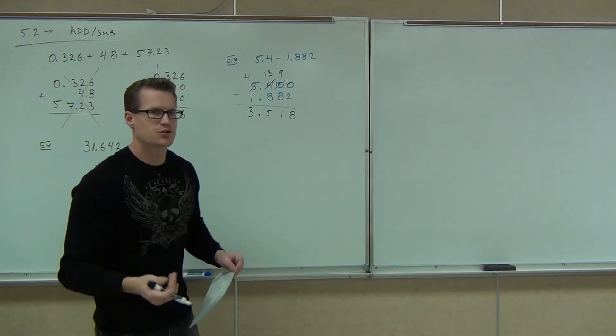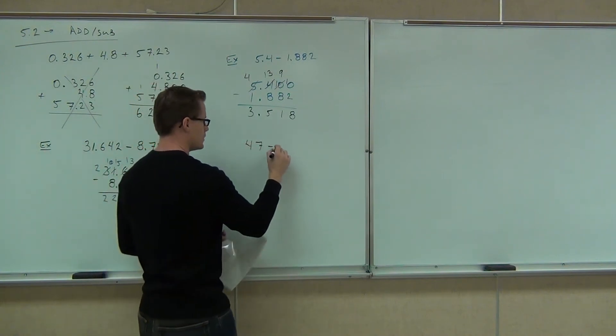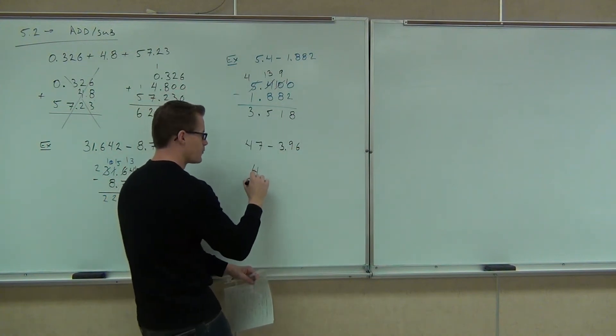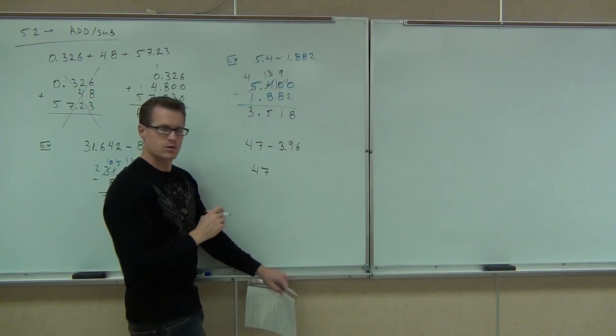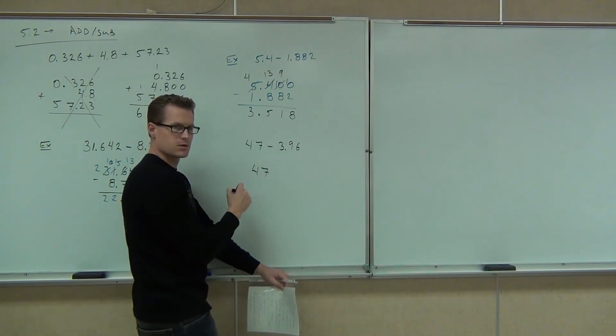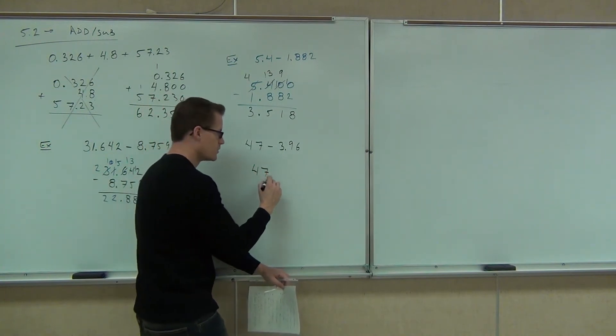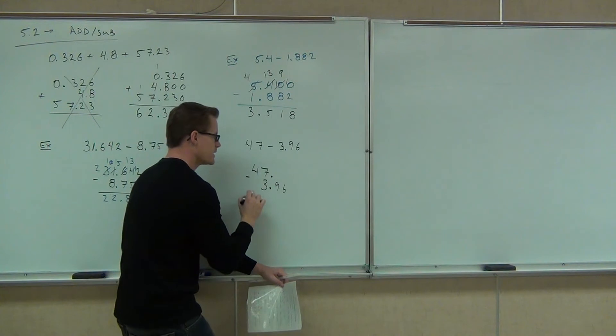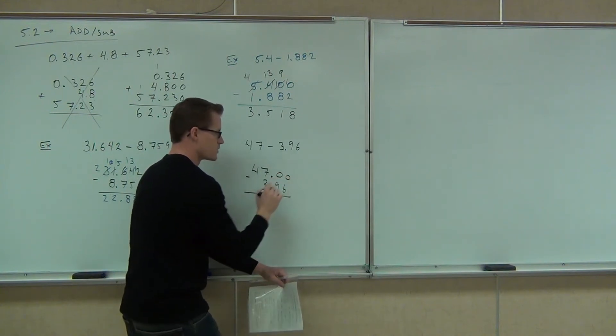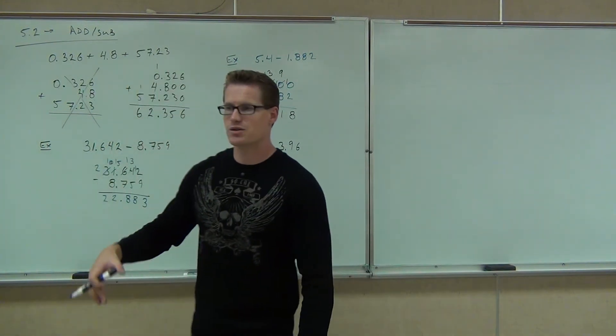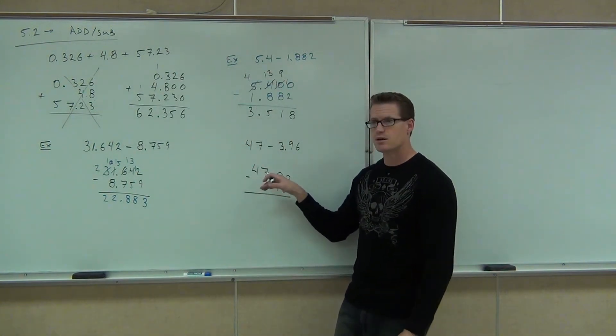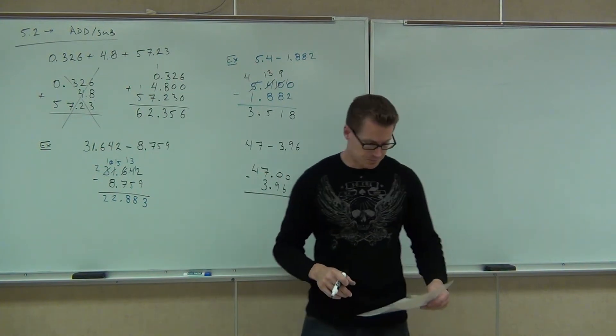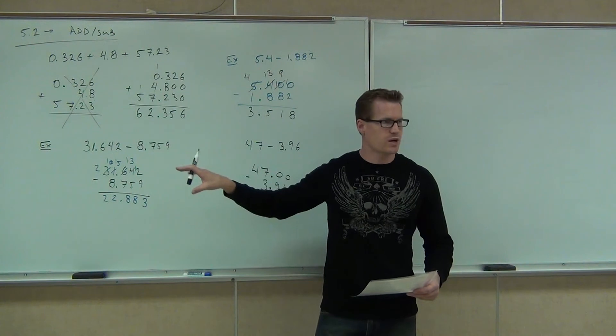Same thing would happen if you take a whole number minus a decimal. Just note that when I lined it up, I'd have 47. Where's the decimal? After the 7. So 47 is a whole number, 0.00. That's still a whole number. Then you'd have to do the 3.96 lined up with that, and then put two zeros. I'll leave that for you to do on your own. Of course, you'd have to borrow from the 7 to make both of these able to be subtracted with our 9 or our 6. Do you feel okay about the addition and subtraction so far?